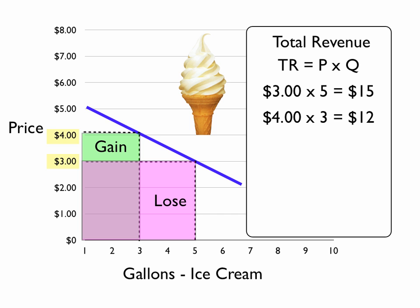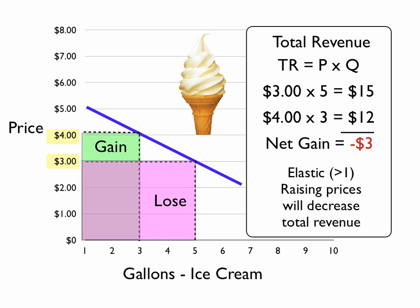We would be losing this area here and gaining that area there. Note that the gain area is smaller than the lost area — we would end up with a net loss of three dollars. So if we have a product that has an elasticity factor of greater than one, raising prices will actually decrease total revenue.